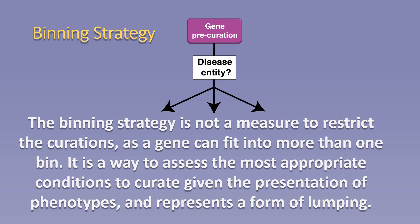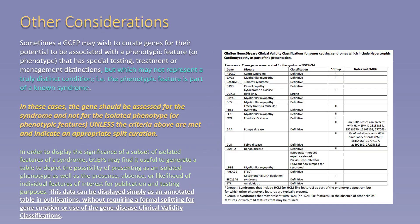Of note, the binning strategy is not a measure to restrict curations, as a gene can fit into more than one bin. Rather, it is a way to assess the most appropriate conditions to curate given the presentation of phenotypes and represents a form of lumping. Sometimes, a gene curation expert panel may wish to curate genes for their potential to be associated with a phenotypic feature that has special testing, treatment, or management distinctions, but may not represent a truly distinct condition.